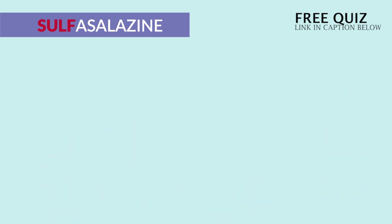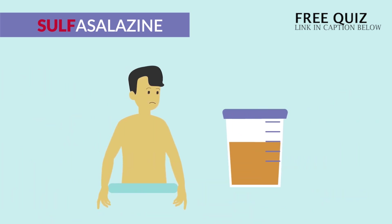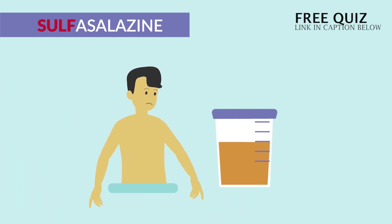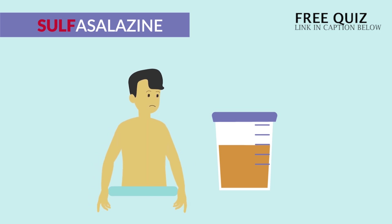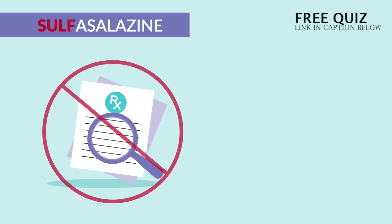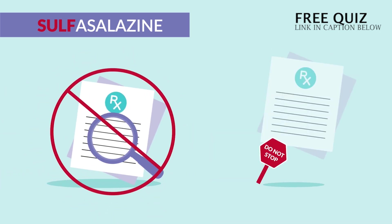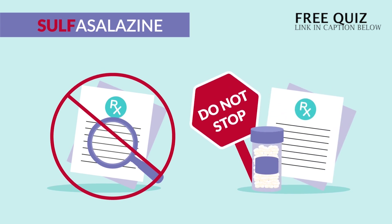Now common side effects — these are normal. We have yellow-orange discoloration of the skin and urine. No need to follow up and no need to stop taking the med.